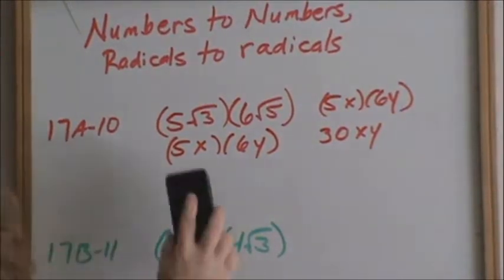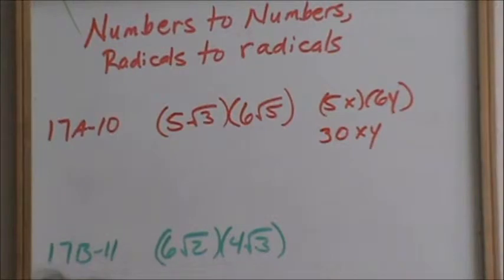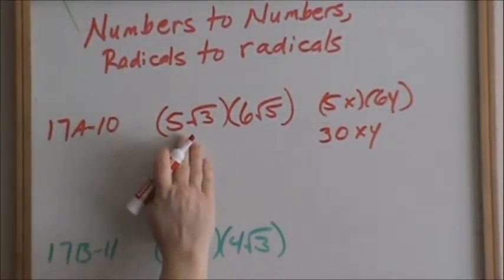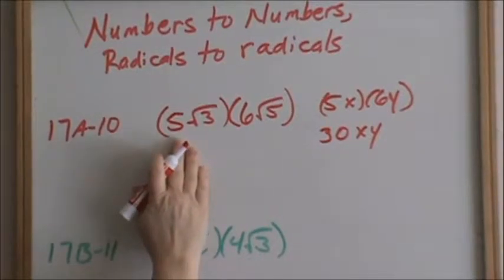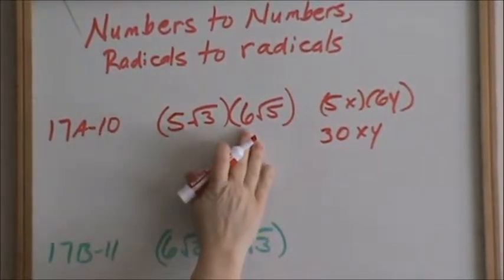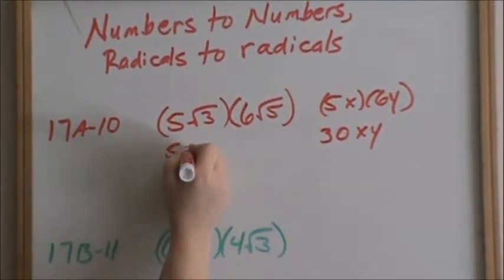Now to do it with radicals. Remember, multiplication is commutative, which means I can rearrange this. This literally means 5 times the square root of 3 times 6 times square root of 5. So if I want to rearrange everything, I can rearrange it like this because multiplication is commutative.